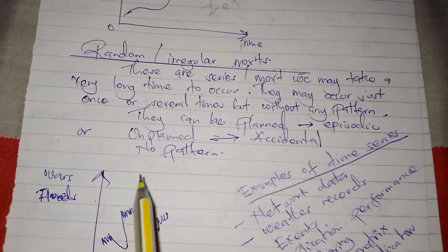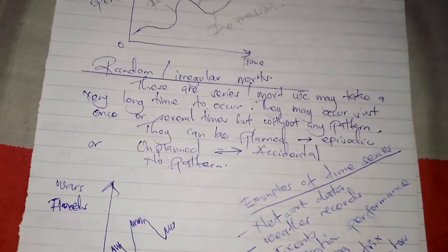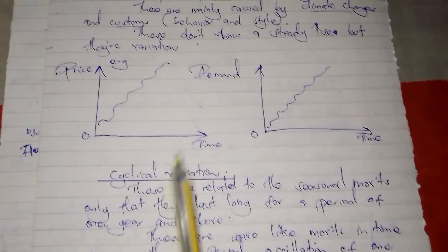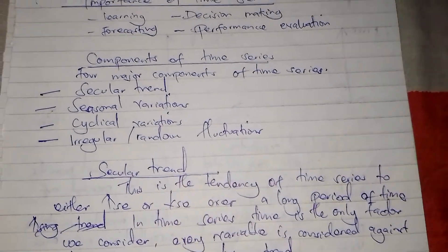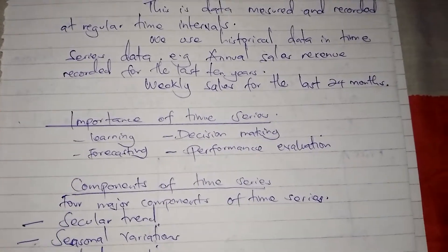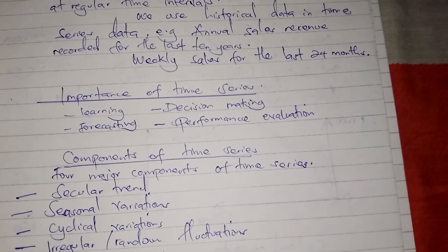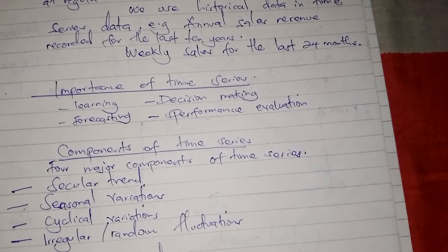Those are the four components of time series: random or irregular movements, cyclical variations, seasonal variations, and the secular trend. Thanks for watching — don't forget to subscribe, like, and comment. We shall continue with this topic in the next video.